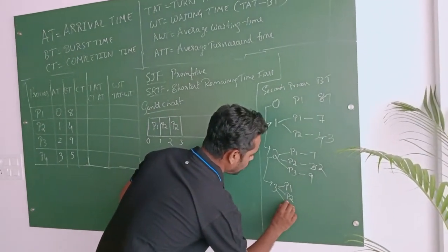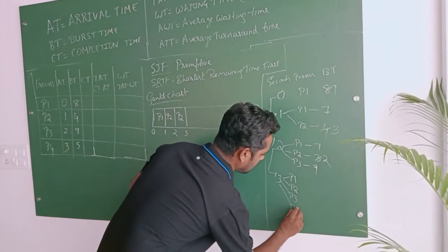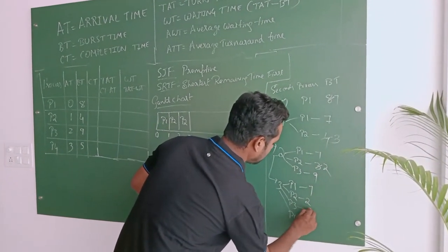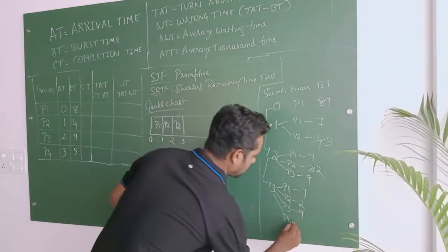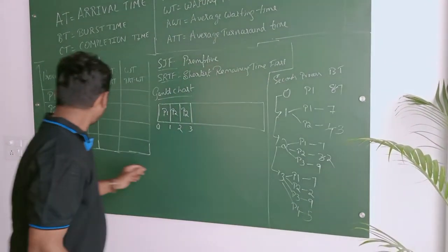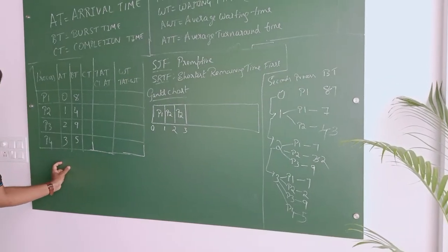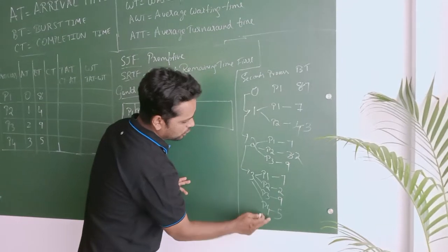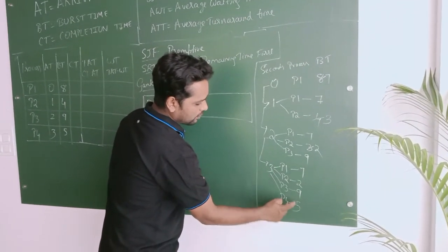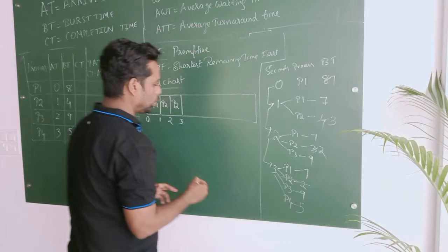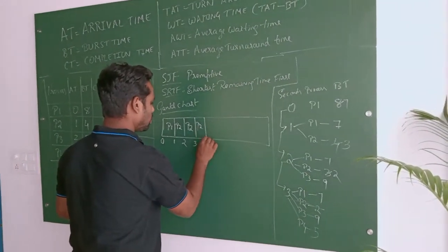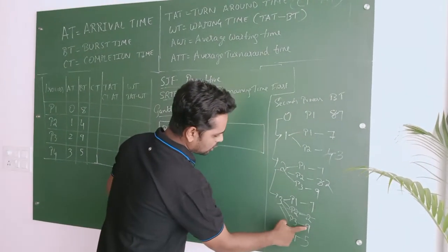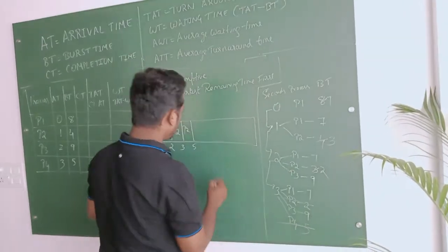At 3 seconds, P4 enters. Now P1 has remaining 7, P2 has remaining 2, P3 has 9, and P4 has 5 seconds. No more processes after this, so go with non-preemptive from here. The shortest time among these is P2 with 2 seconds. P2 executes 2 seconds, making it 3 + 2 = 5. P2 is done. Next shortest is P4 with 5 seconds.